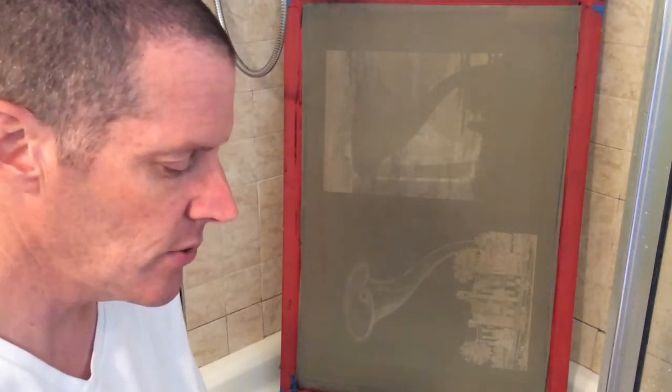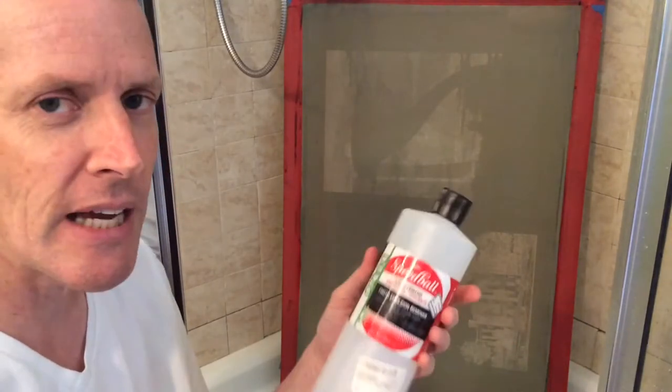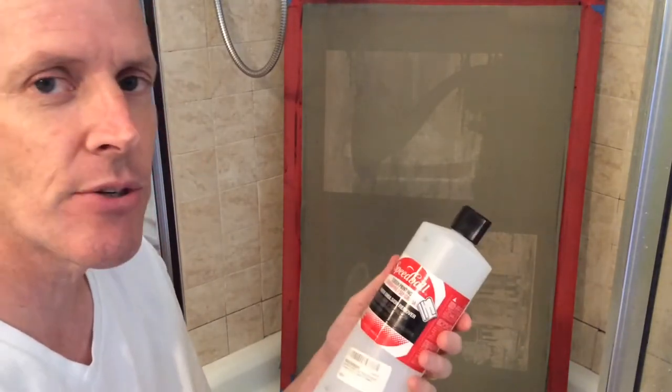And we'll use this photo emulsion remover. This is the Speedball one. This has periodic acid. It's a strong oxidizer, a little bit like bleach.